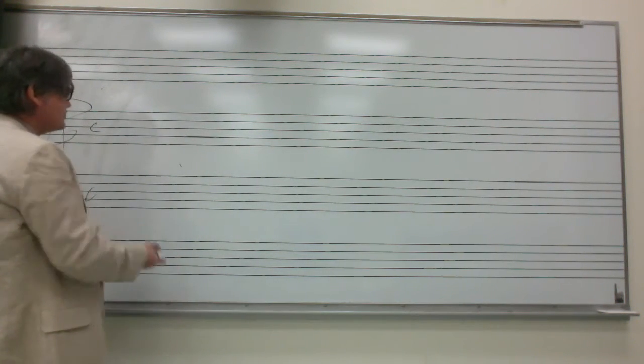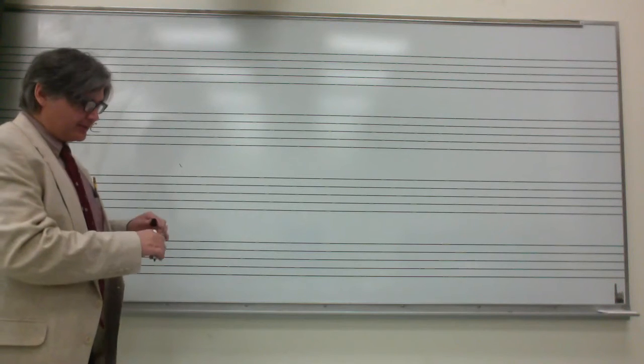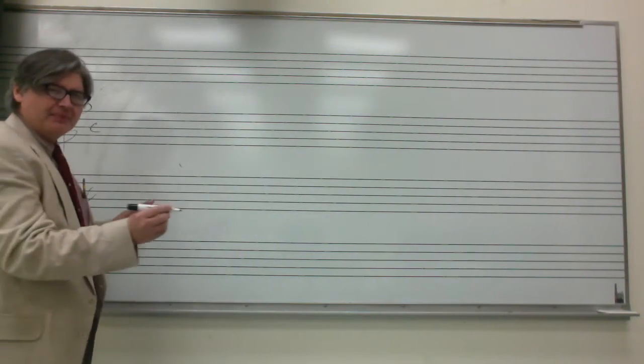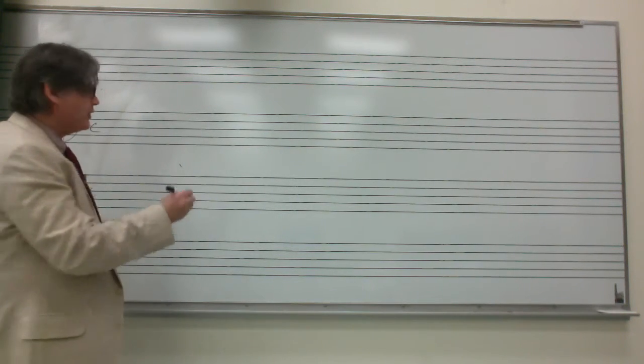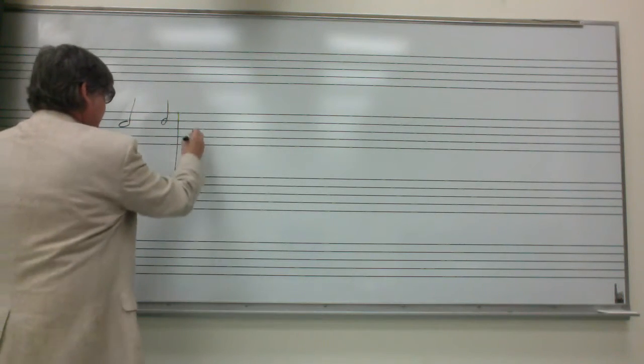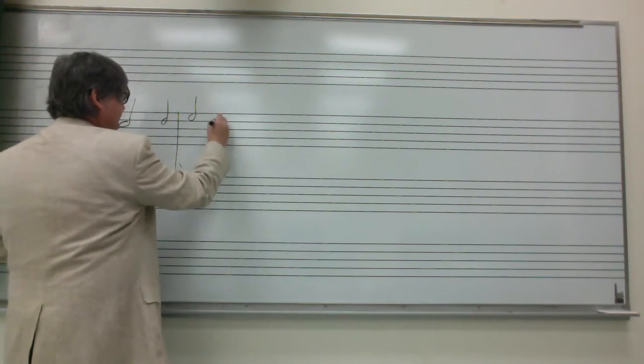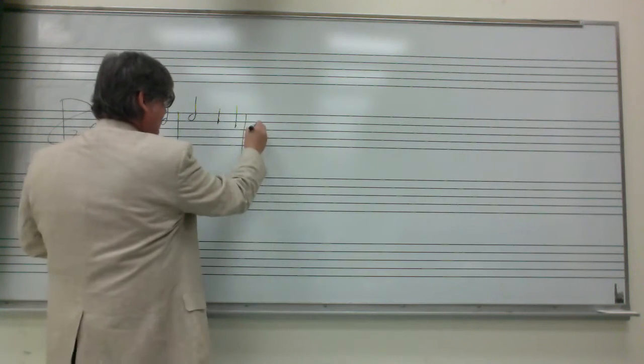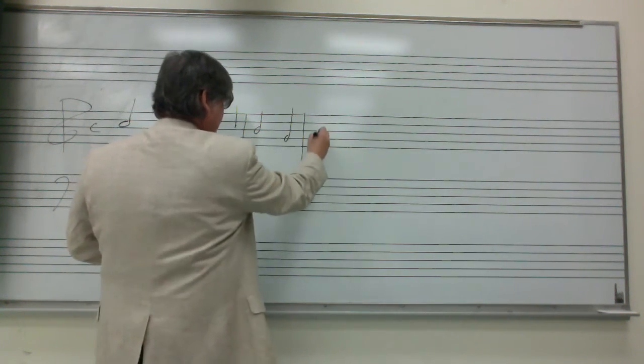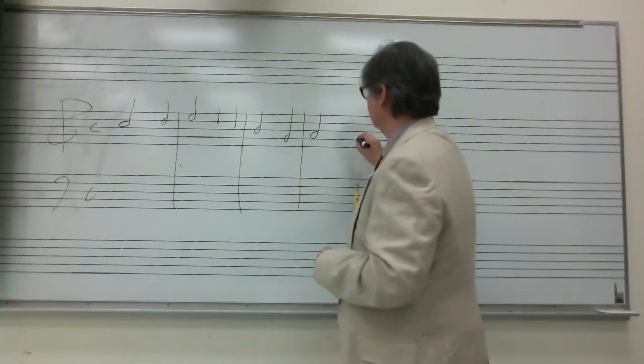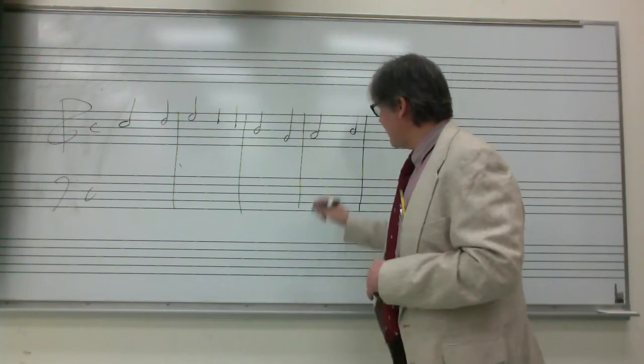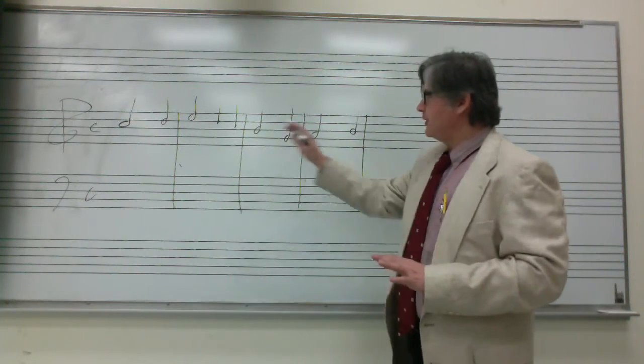To make it easy, we'll just keep it in the key of C for right now. The first thing I do is write out a melody. I think of a melody before I go anywhere else, and I'll keep it basically simple. I'll just do half notes and quarter notes. So we're on a half cadence there. Now I have a melody written out.